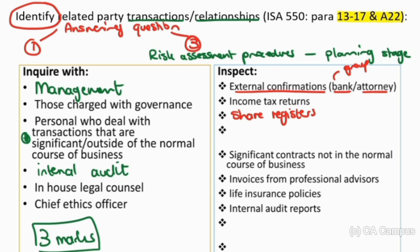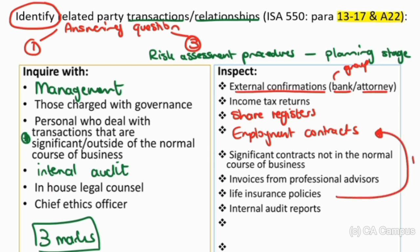Thinking back to our definition of related parties — it wasn't only people related through control or joint control, there was also key management. To identify key management, I would look at employment contracts, which give me an idea of who is in key management. Other documents include contracts that are outside the normal course of business as an indicator of related parties, invoices from professional advisors, life insurance policies because those are taken out over key management, and internal audit reports — since we can inquire with internal audit and also obtain physical evidence from them, just as we get external confirmations from legal counsel.